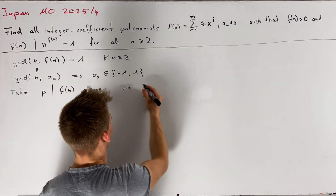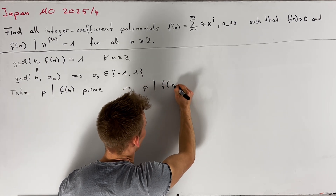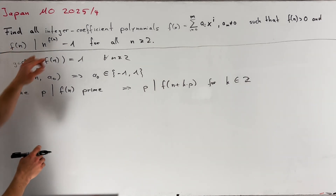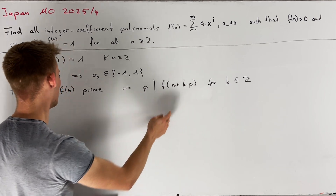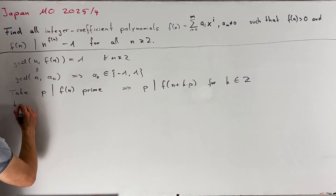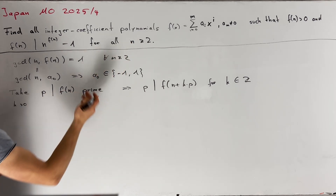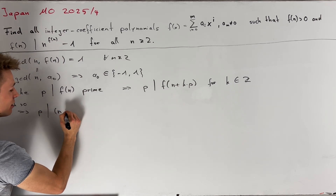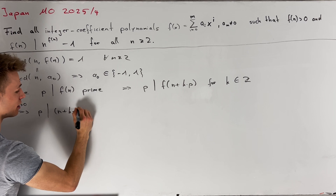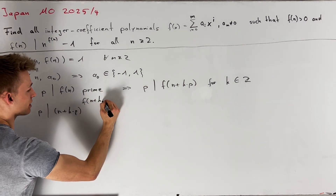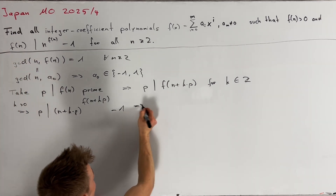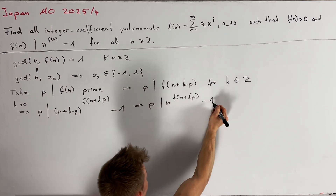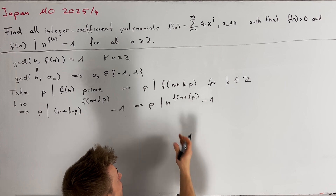Hence, we can directly conclude that p also divides f(n + k·p) for every integer k. Now we want to apply our divisibility condition for n + k·p instead of n, with k greater than 0. This implies that p is also a divisor of (n + k·p) to the power of f(n + k·p) minus 1, and therefore p also divides n to the power of f(n + kp) minus 1.